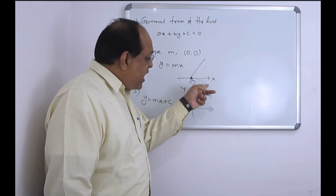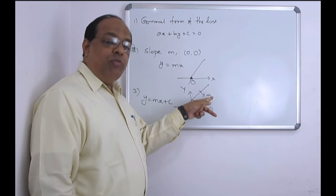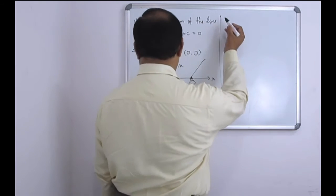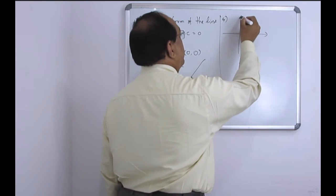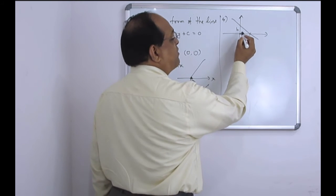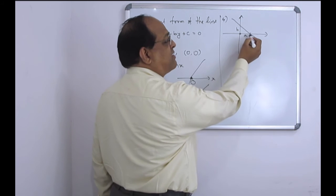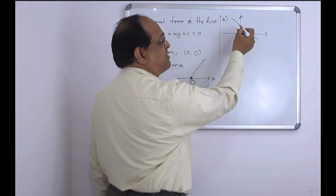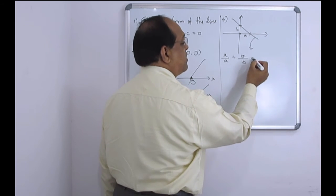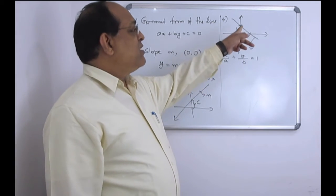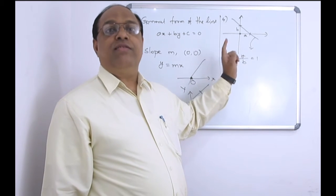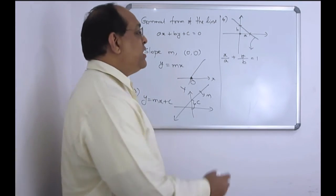If the line makes a y-intercept of c and has slope m, then the equation is y is equal to mx plus c. Similarly, if a straight line makes an x-intercept of a and a y-intercept of b, then the equation is x by a plus y by b is equal to 1. This is also called the intercept form of a straight line.